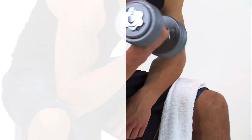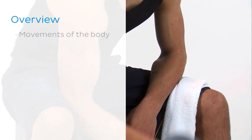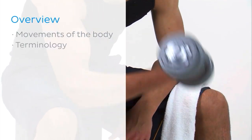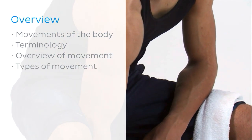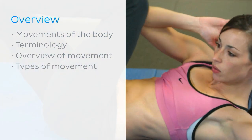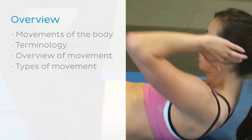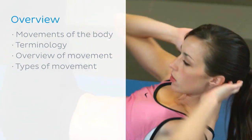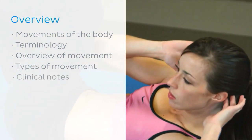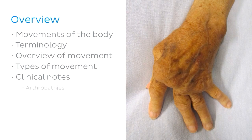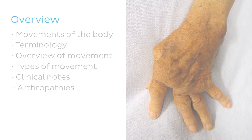We'll do a brief overview of movement in general to start with, and next we'll run through each of the different types of movement and where they are possible in the body. Then we can talk about why this knowledge is important clinically and take a brief look at a condition called arthritis. We'll finish off with a summary of what's been covered.